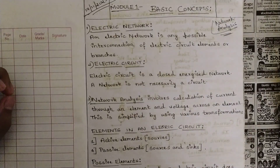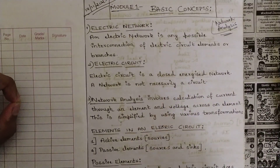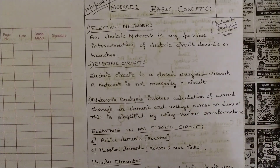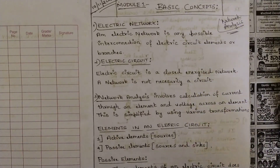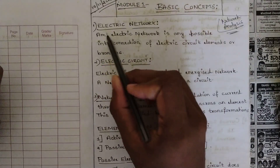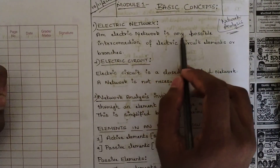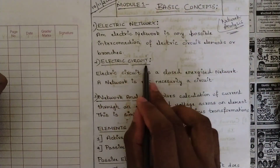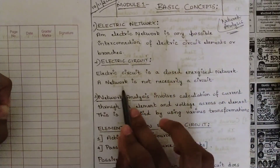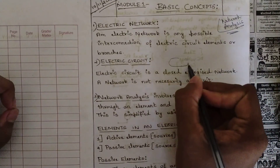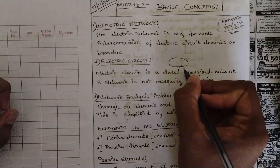I'll give a brief overview of the types of problems, networks, and circuits in this subject — just brushing up concepts you've already done in PUC, 10th, and first year engineering. The first definition is electric network: any possible interconnection of electric circuit elements or branches. Electric circuit is a closed energized network — a closed loop where current travels around the loop.